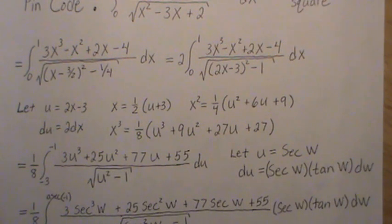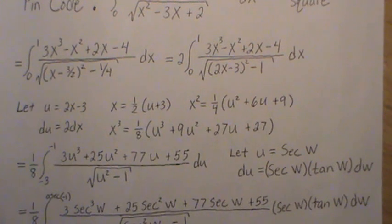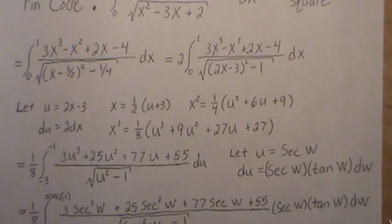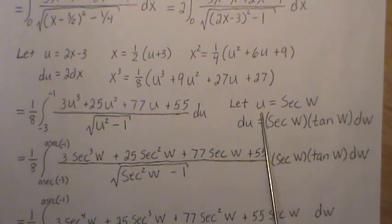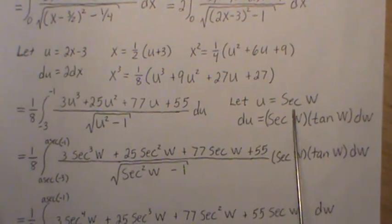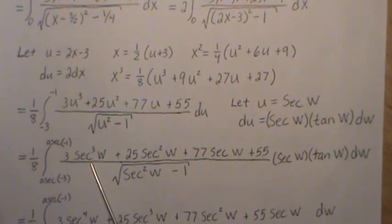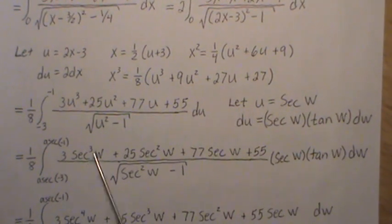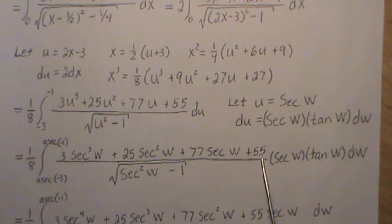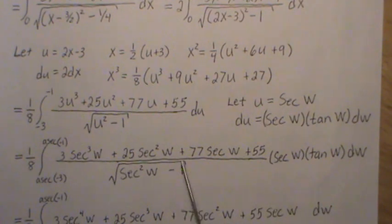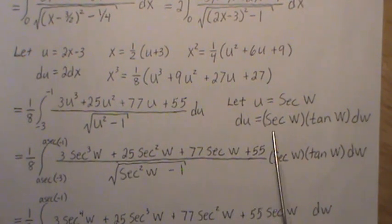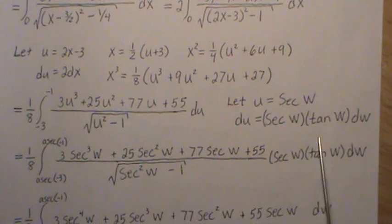Now I have a video called Derivatives of Inverse Trig Functions and Trig Functions, which goes over this derivation in great detail. Now we make the substitutions, right? So if we put secant of w here, we get secant cubed of w and so forth in the numerator. Here we get secant squared w, right? And then du is equal to this. So we plug it in the formula.